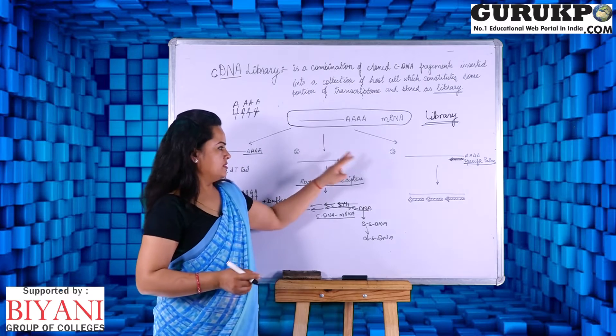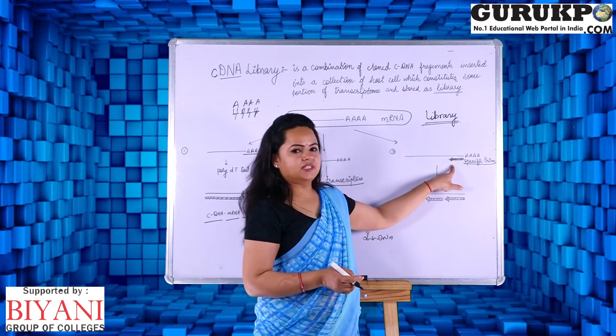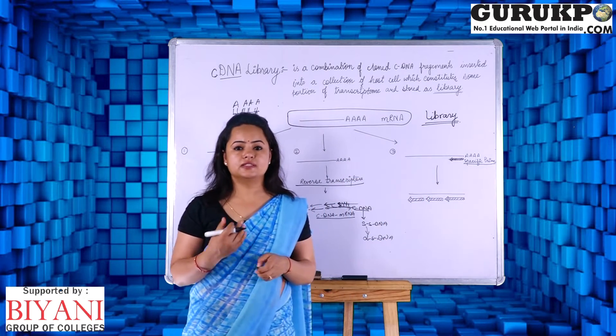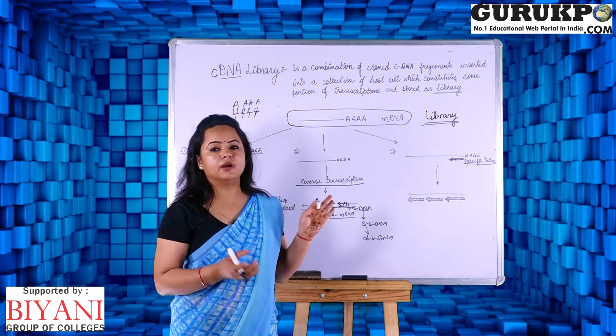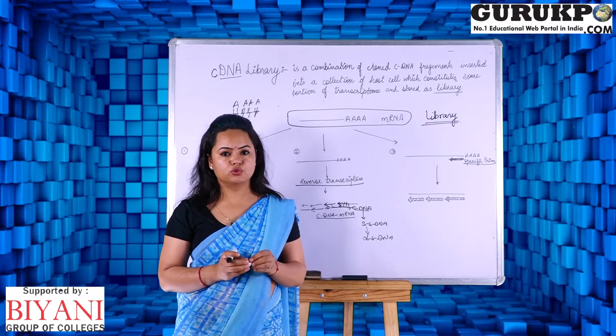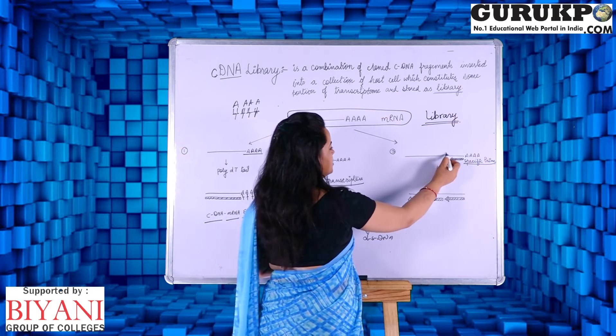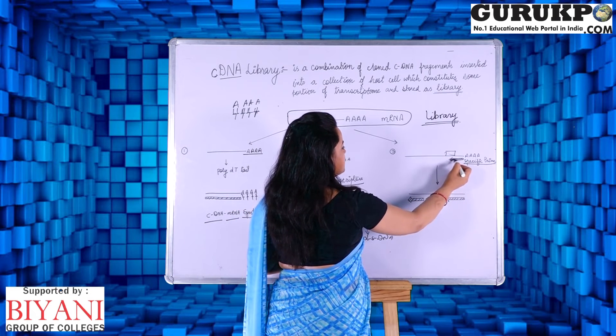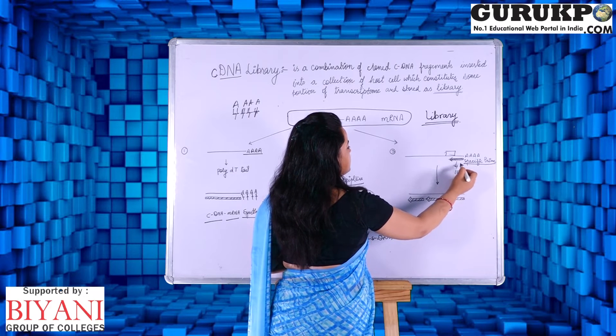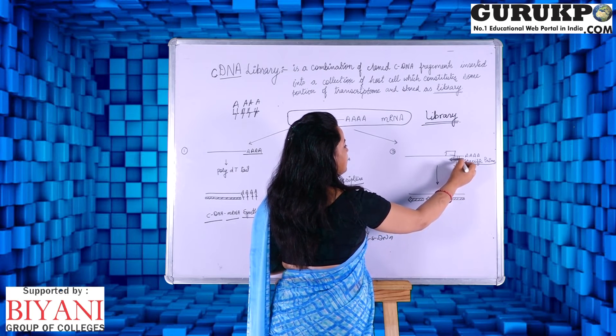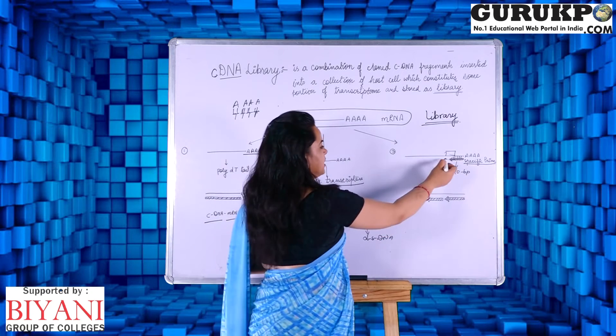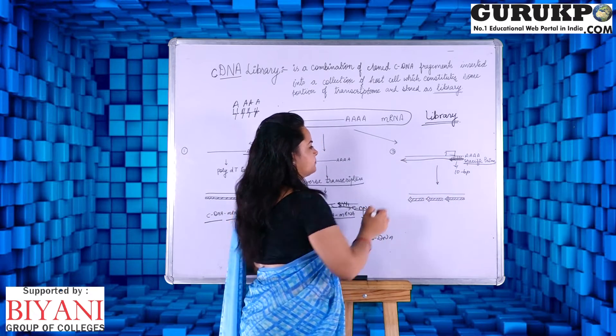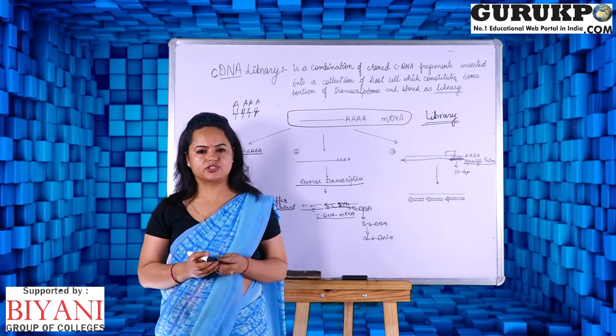In the third procedure, we just have to use a specific primer which is just an easiest way, easiest approach to create a cDNA library. But foremost thing is we must know the exact sequence of the messenger RNA and we will take this 10 nucleotide base pair sequence. This sequence will act as an anchor and it will form a bond with the messenger RNA.